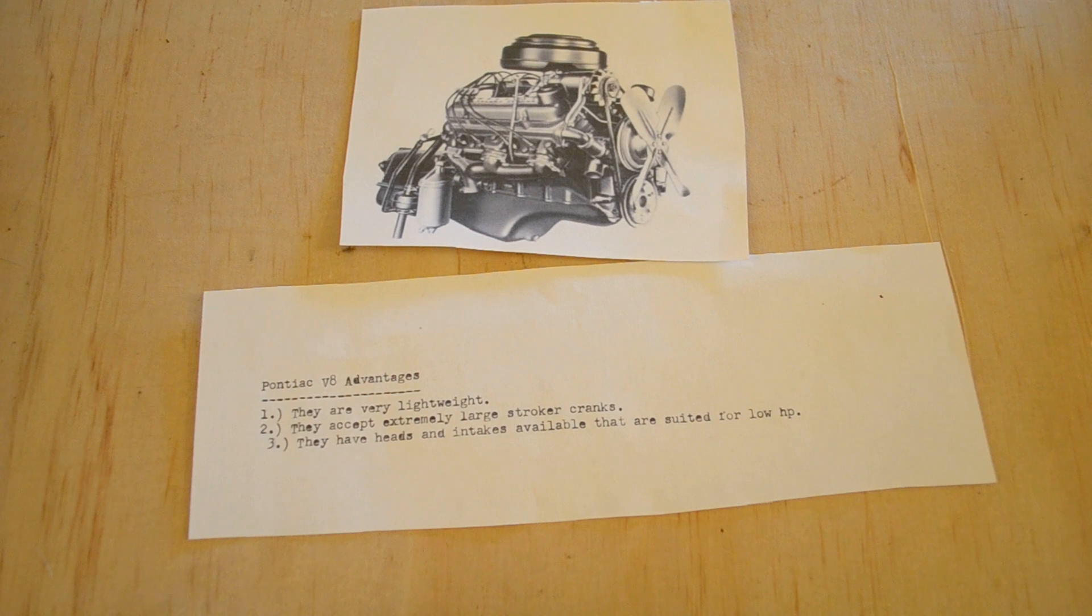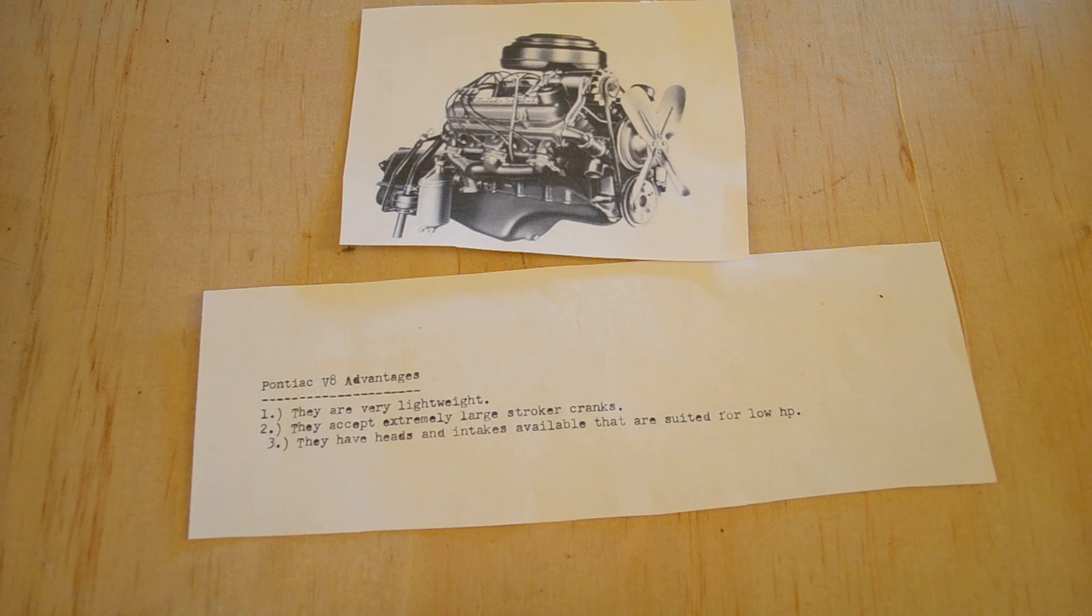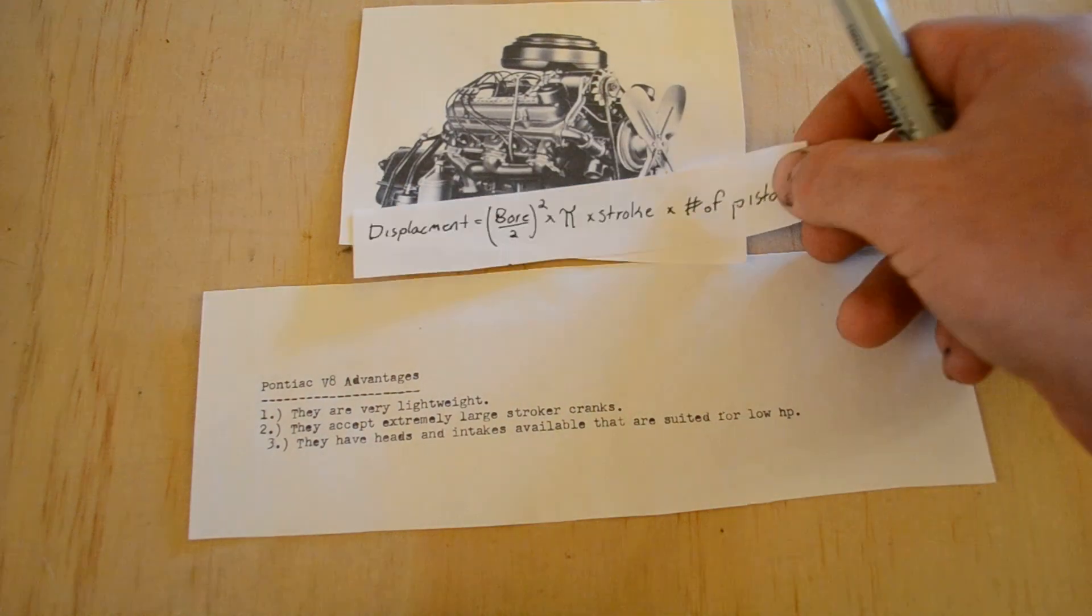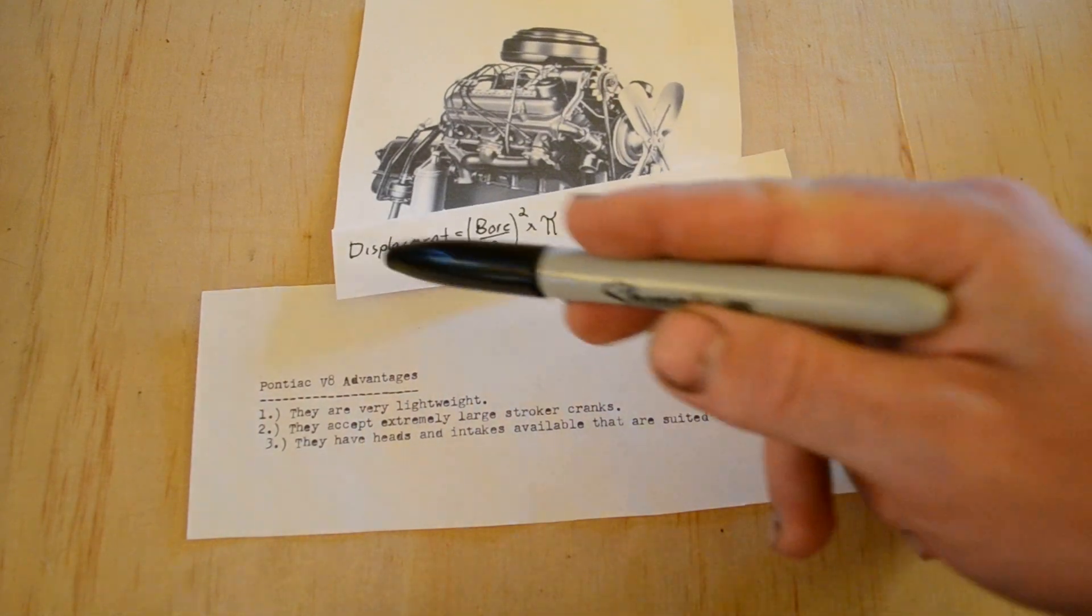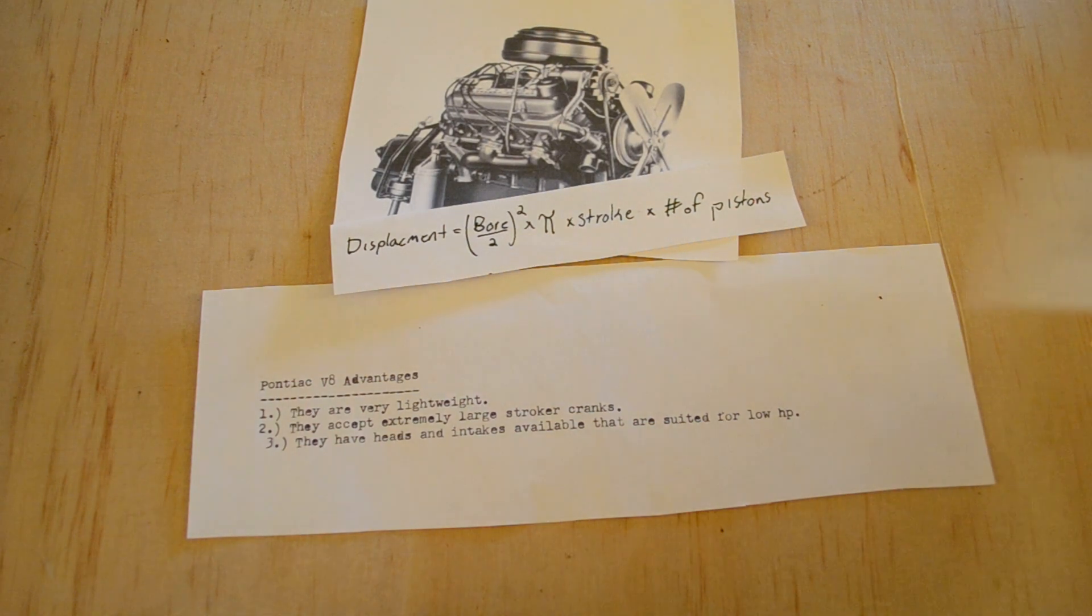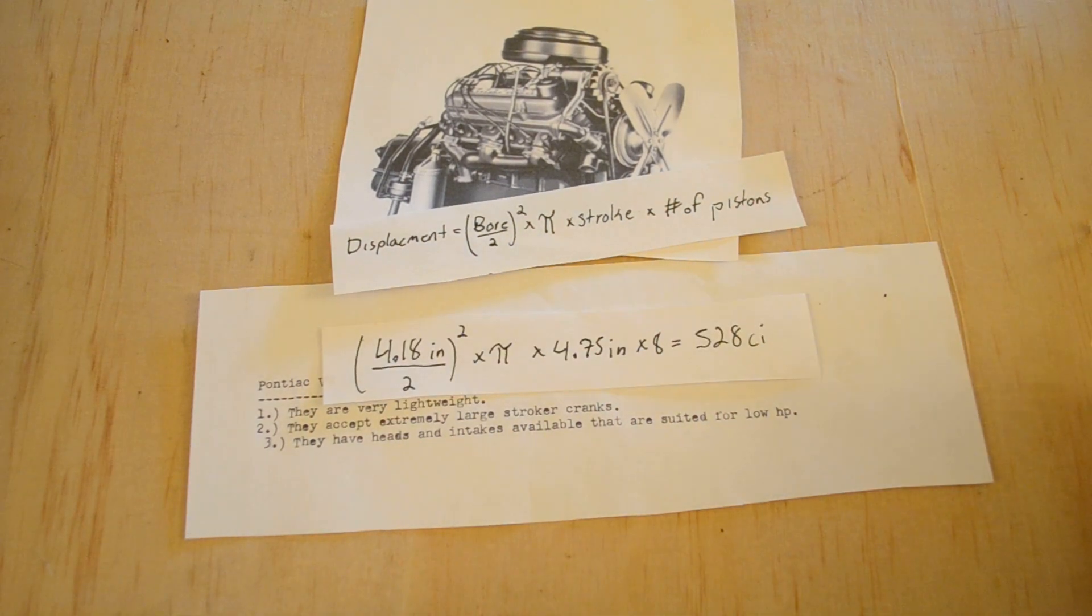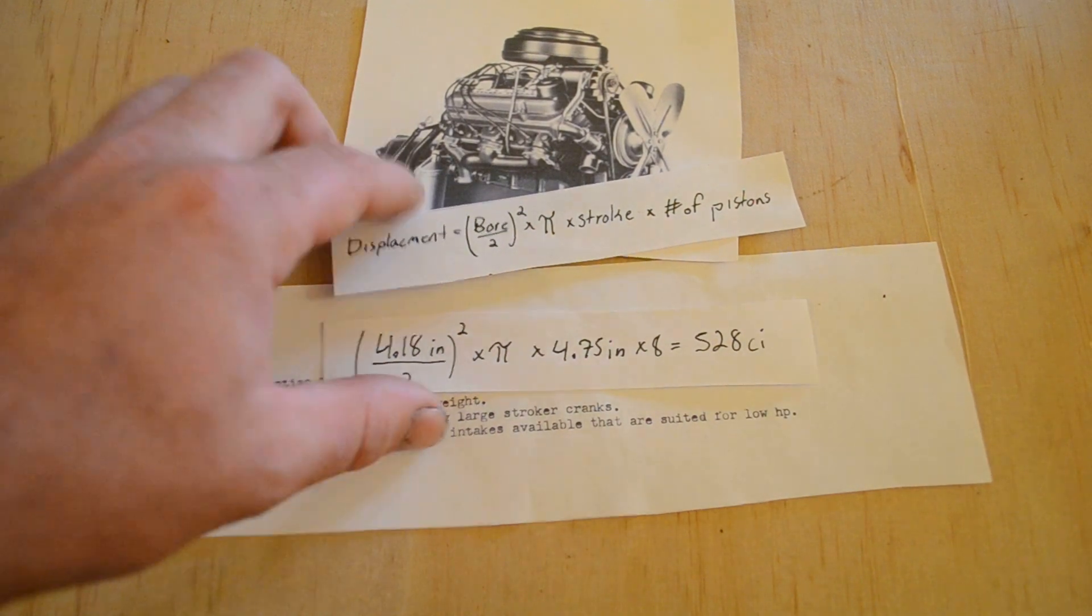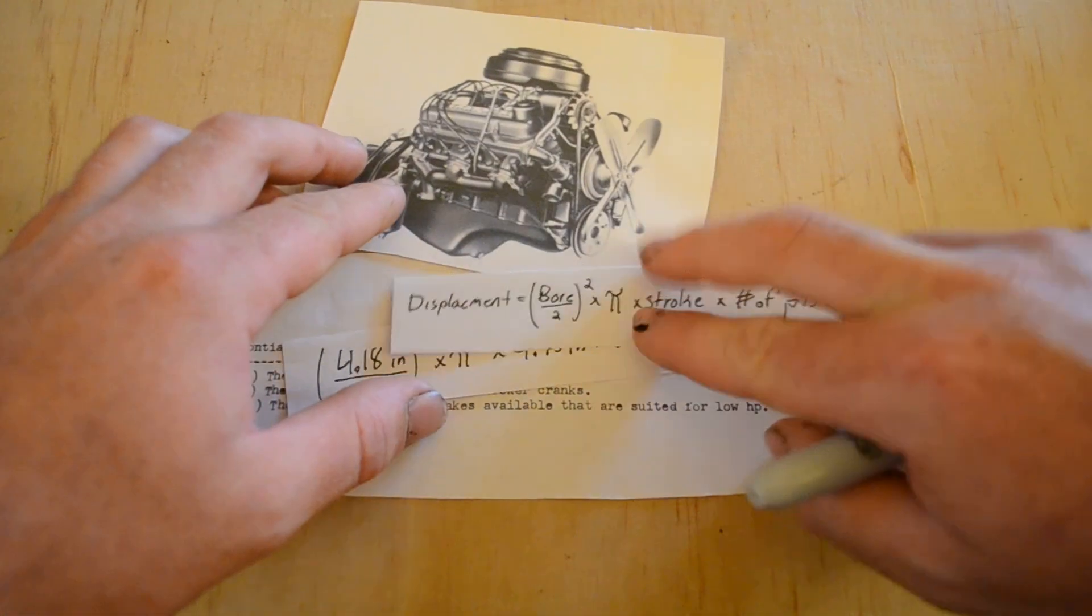The second good thing about Pontiac V8s is they accept some really large crankshafts. The biggest one I could find was 4.75 inches, which is absolutely massive for a crankshaft. Now when you increase the stroke of a crankshaft, you increase the displacement of an engine, so putting that crankshaft in a Pontiac 400 with a 60 thousandths overbore would increase the displacement to 528 cubic inches, which is almost exactly what I'm looking for to make the amount of torque that I need.